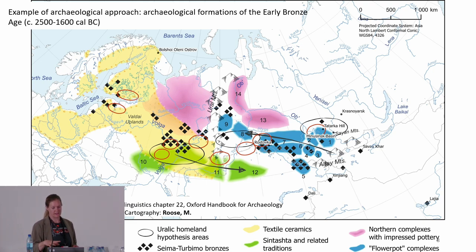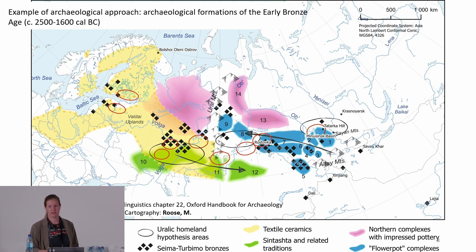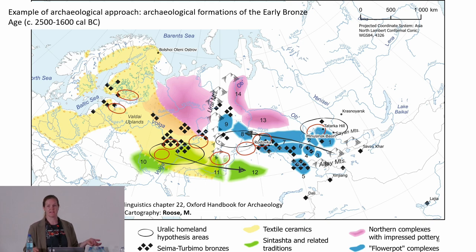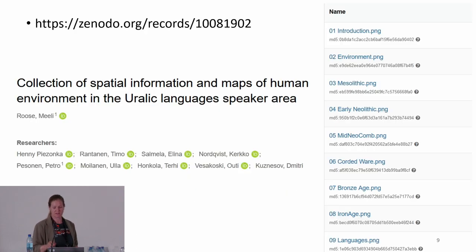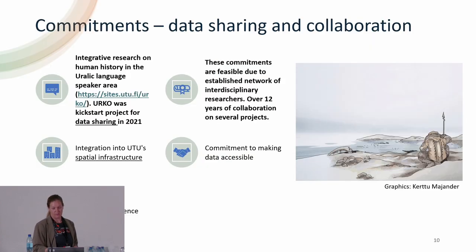This is another example of archaeological data and how exactly we support all these hypotheses. There are archaeological items that represent cultures. When one item is found in one place and another item is found in another place, it indicates that people groups have been moving around. All these maps are also available in Senado — if you are interested, you can browse this collection.